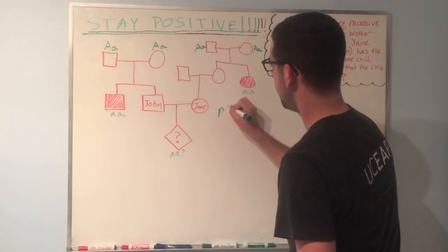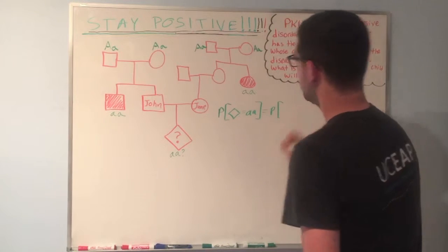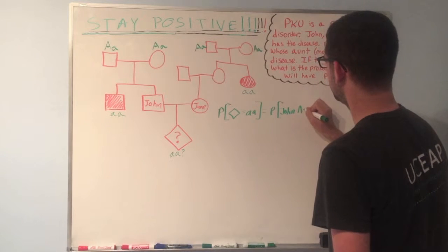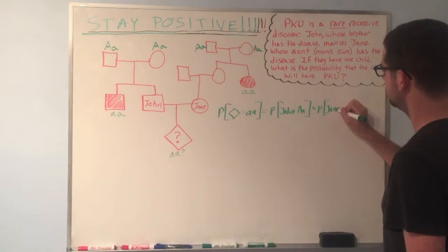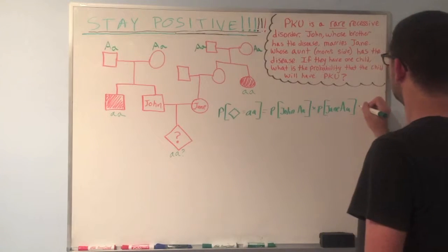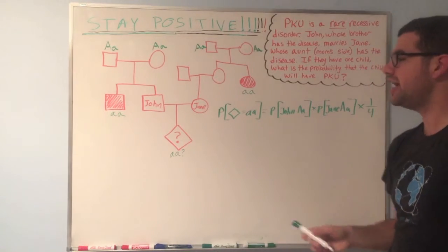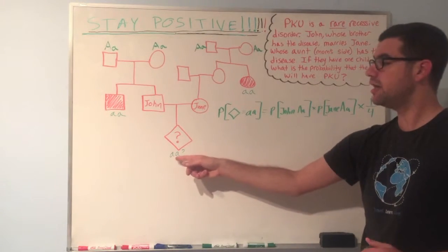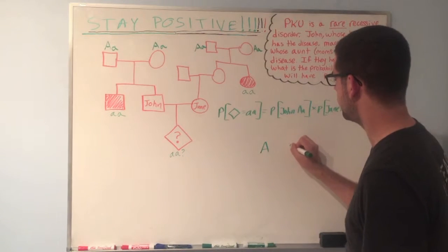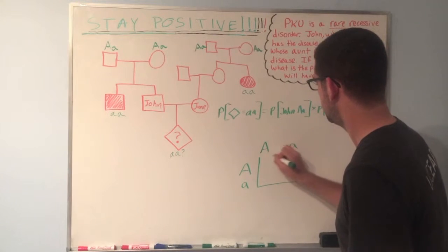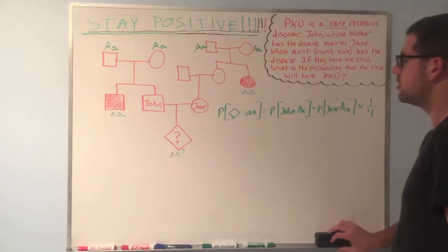To write it out formally, we could say that the probability that this diamond right here is little a little a is equal to the probability that John is big A little a, and I'm just going to write John, big A little a, times the probability that Jane is big A little a, Jane, big A little a, and then all of that times one fourth. And why are we multiplying by one fourth? Remember, just because these two are Jane, John and Jane are heterozygous, that does not necessarily make the child little a little a. There's a chance that he'll be little a little a, and that is one fourth. We could prove that real quick by doing a Punnett square, crossing big A little a with big A little a, the chances of having the child little a little a are just one out of four.